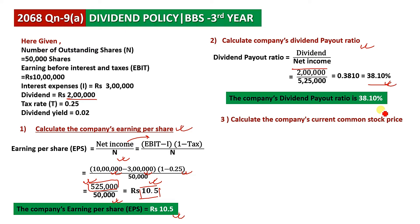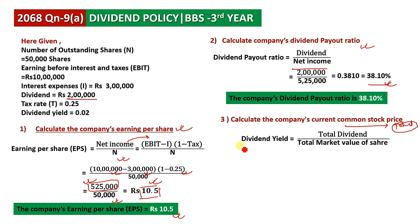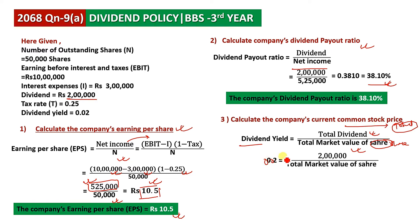To calculate the company's current common stock price: dividend yield equals total dividends divided by total market value of shares. We rearrange to find the market value of shares, then divide by number of shares to get the market price per share.